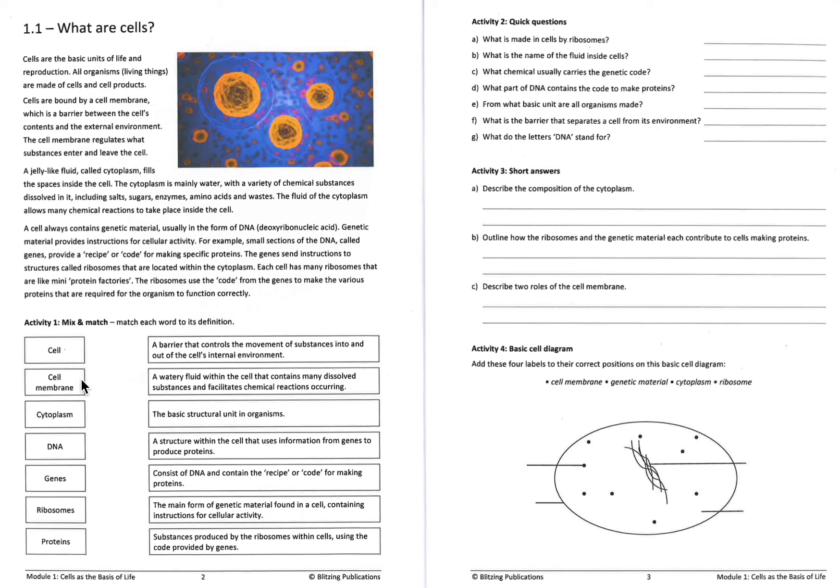Now, you can do all of these on activity one. So you would say, what is a cell membrane on one side of your study card? On the other side of your study card, you would have, and hopefully matched up in your homework, that a cell membrane is the barrier that controls the movement of substances into and out of the cell.